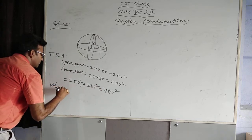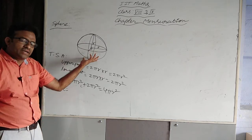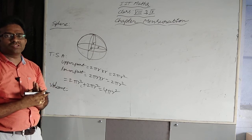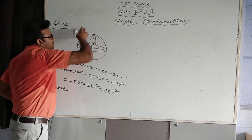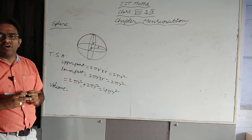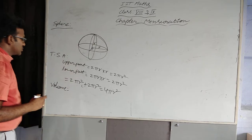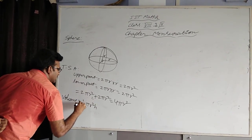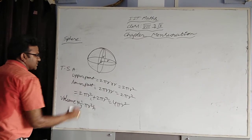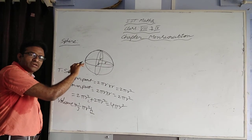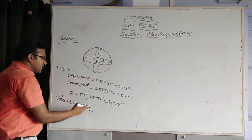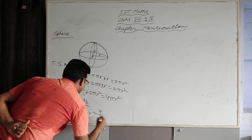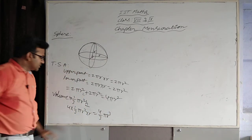For volume of the sphere, we are going to cut it into 4 cones. Each cone volume is (1/3)πR²h. Height of each cone is also R, so: 4 × (1/3) × πR² × R = (4/3)πR³. So this is the volume of the sphere.